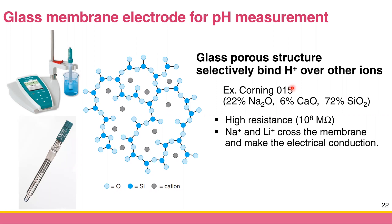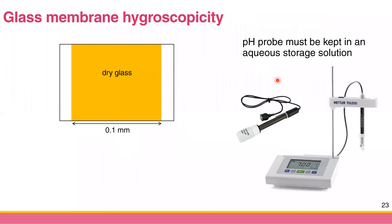The glass membrane has the appropriate charge and pore size so that it can selectively bind with protons. But this is just the glass membrane by itself — how does it work in actual real life?